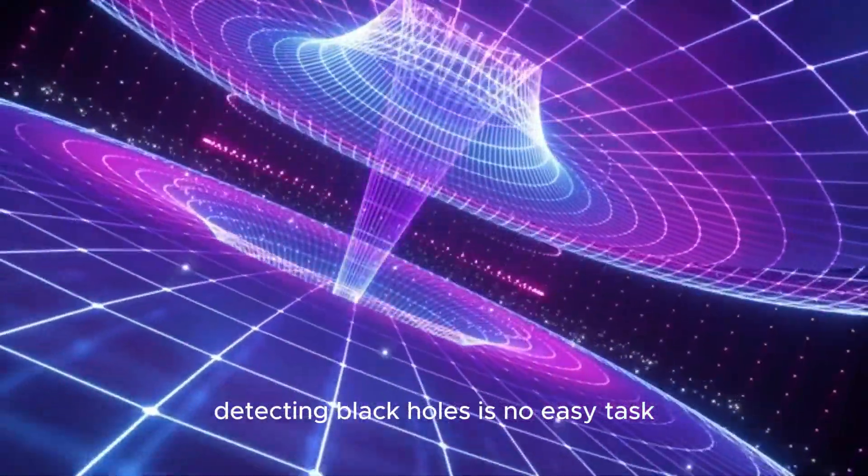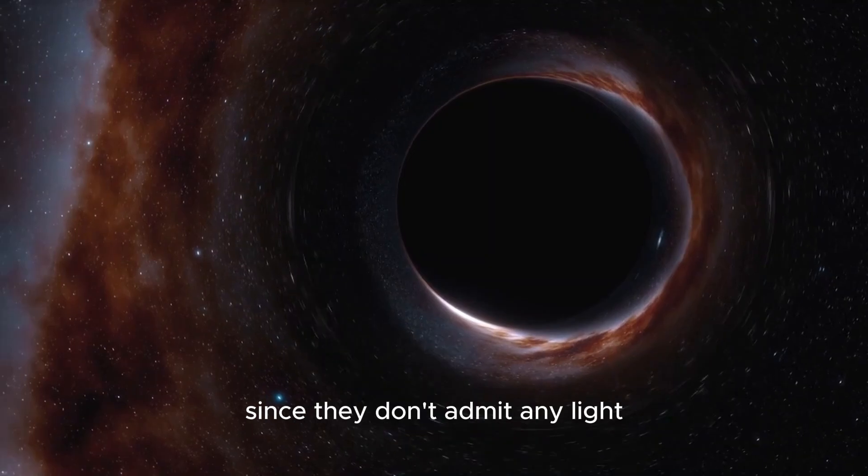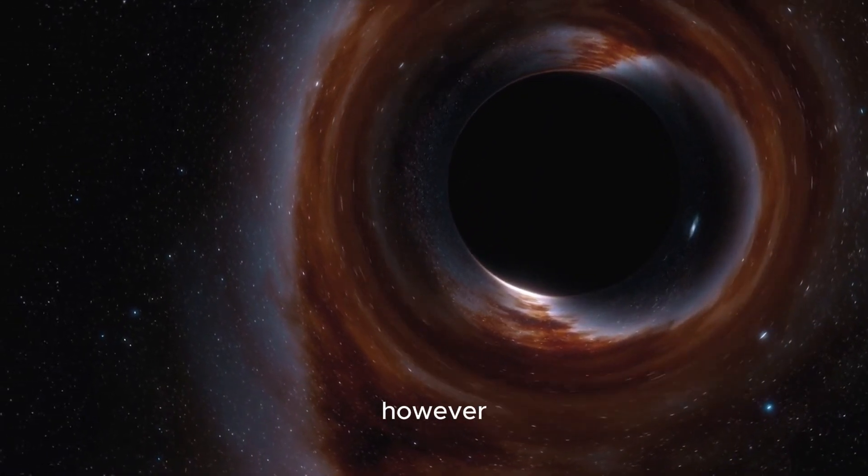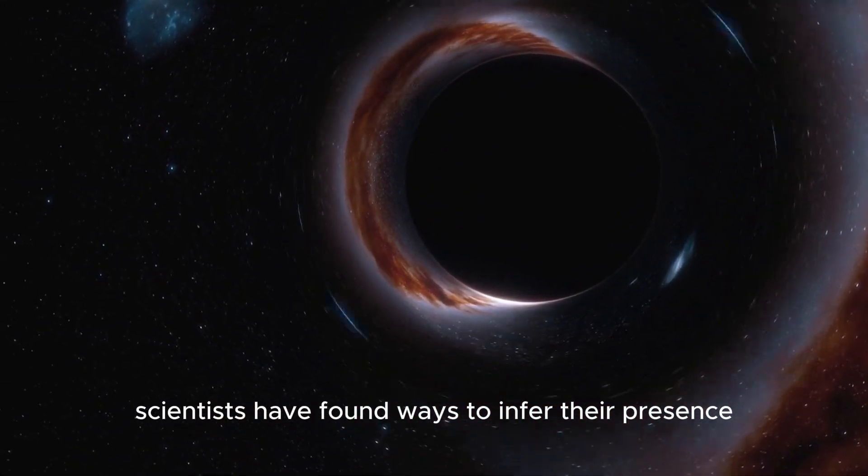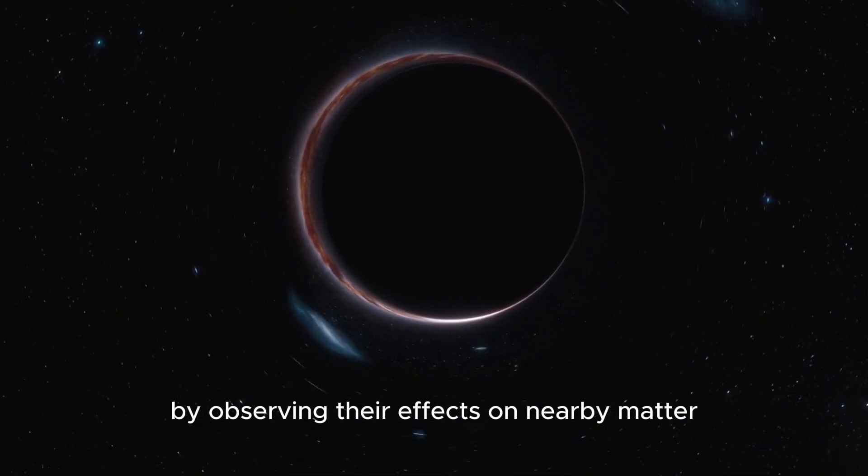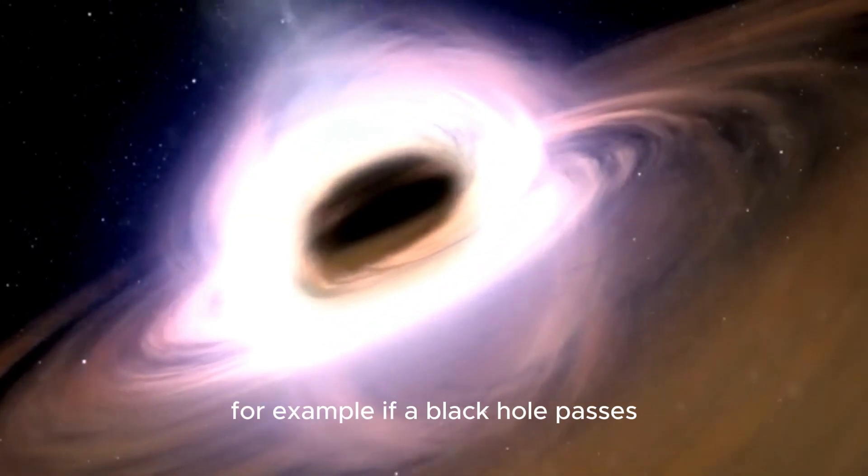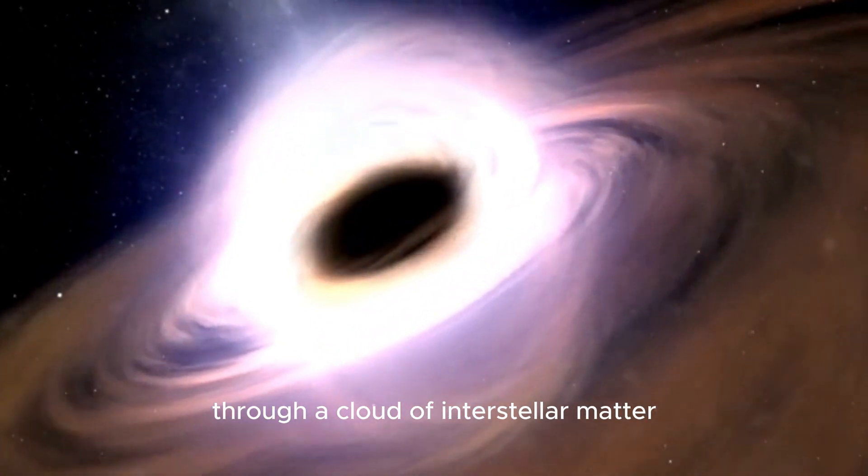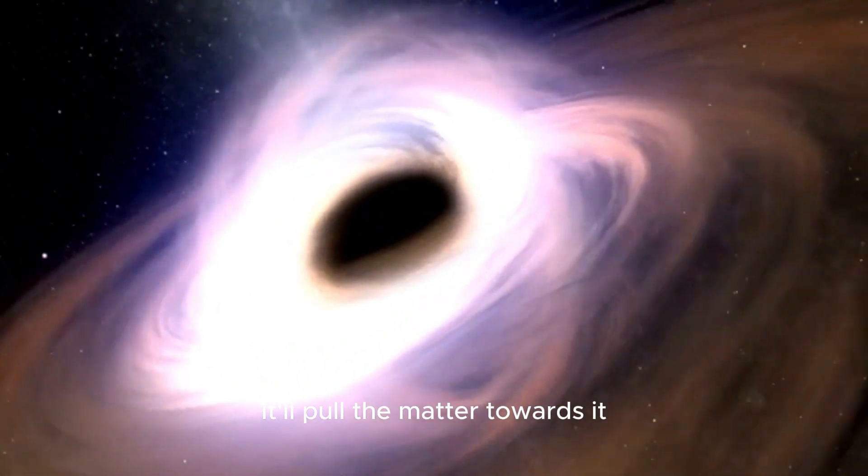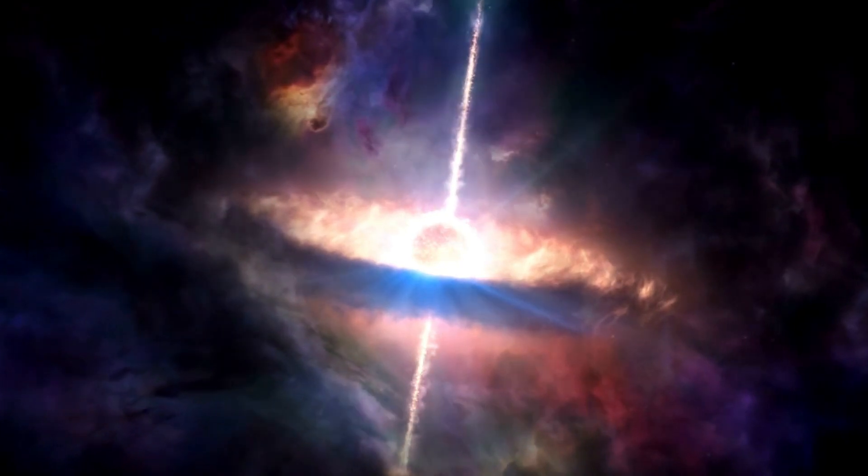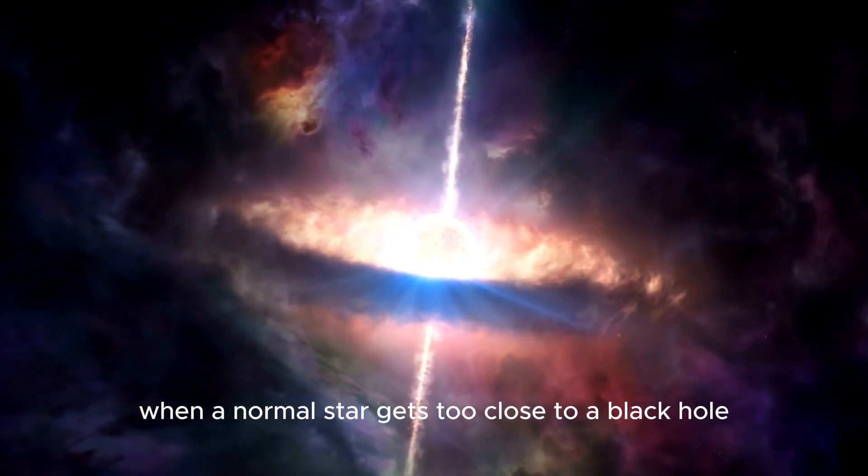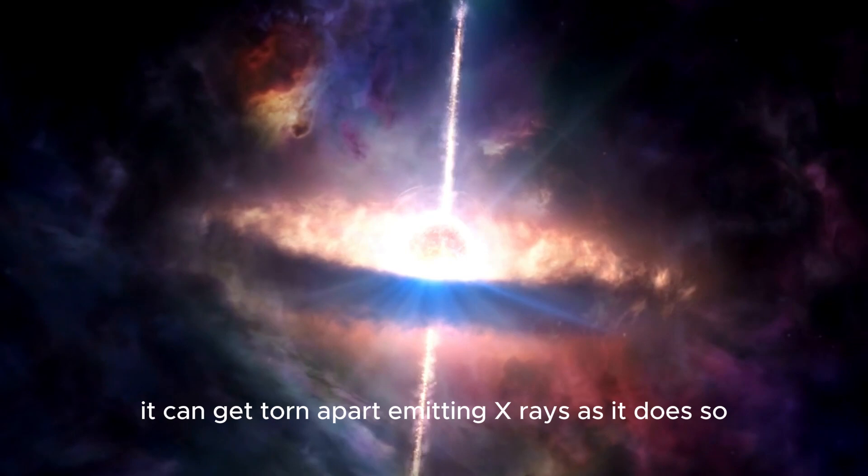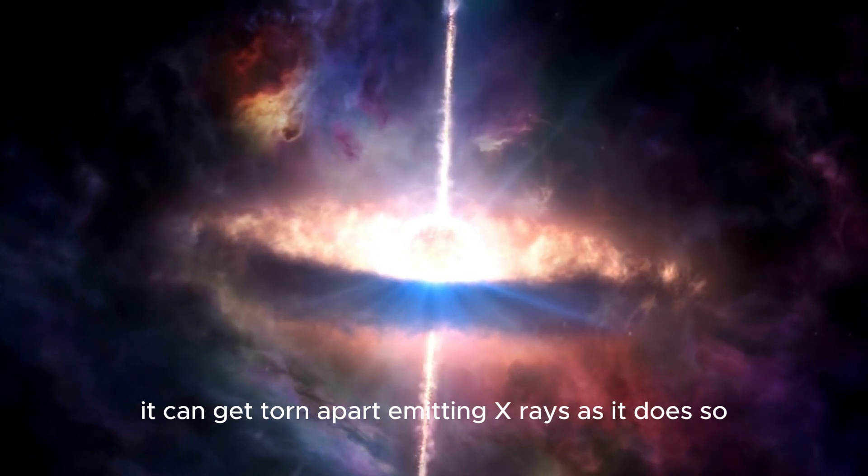Detecting black holes is no easy task since they don't emit any light. However, scientists have found ways to infer their presence by observing their effects on nearby matter. For example, if a black hole passes through a cloud of interstellar matter, it'll pull the matter towards it in a process called accretion. Additionally, when a normal star gets too close to a black hole, it can get torn apart, emitting X-rays as it does so.